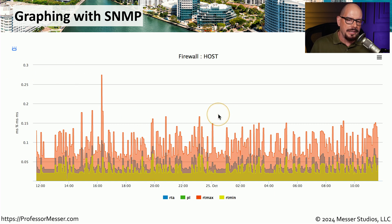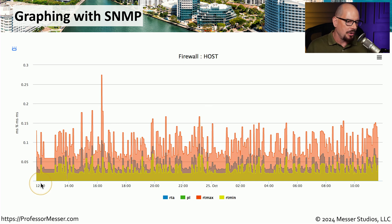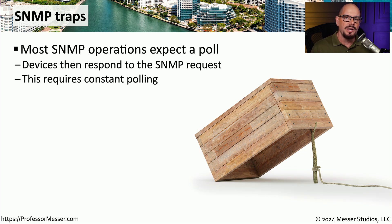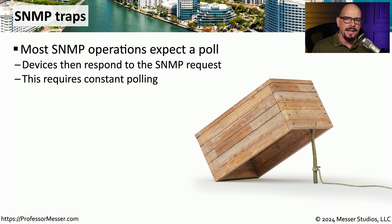This graph was created through a series of SNMP queries that take place on a standard basis. Over an entire day you can map out information such as response time values, any type of errors, or anything else contained within that MIB. This implementation of SNMP assumes your network management station queries all SNMP-enabled devices at regular intervals — commonly every minute or every five minutes. But if there's a problem on that device, you may not know until the next time you perform that poll.